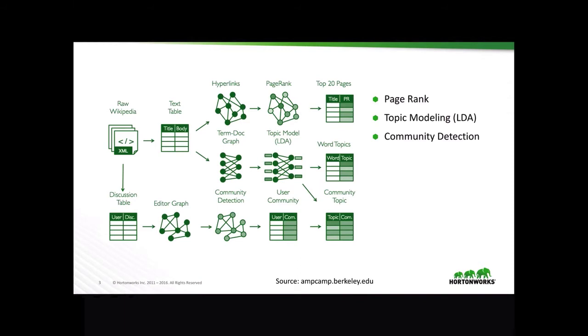We can take the raw Wikipedia text in an XML format and create a text table with both a title and a body. Once we have this, we can create a hyperlinks graph to which we can apply a PageRank algorithm to find the top 20 pages with a title and a page rank.